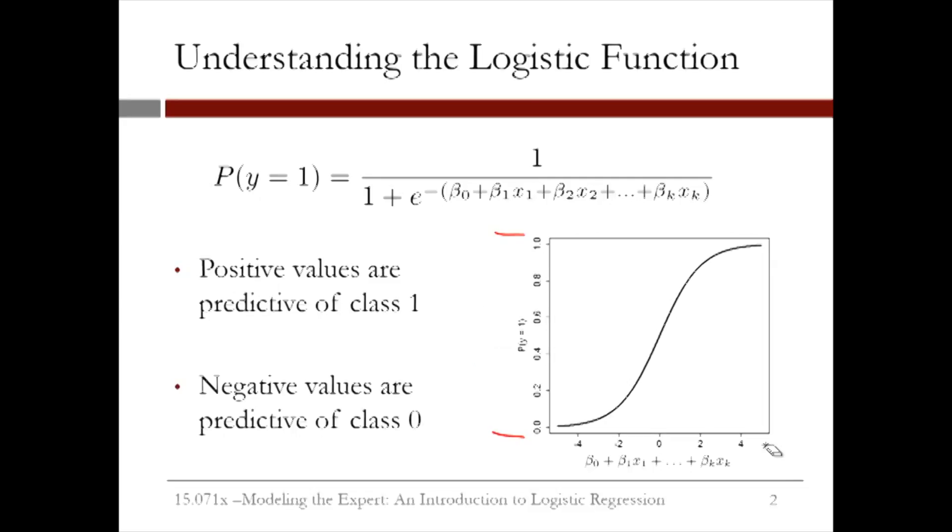On the other hand, a negative coefficient value for a variable decreases the linear regression piece, which in turn decreases the probability that y equals 1, or increases the probability of good care.